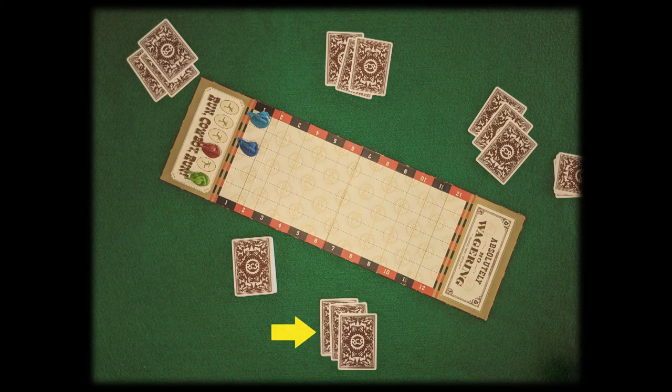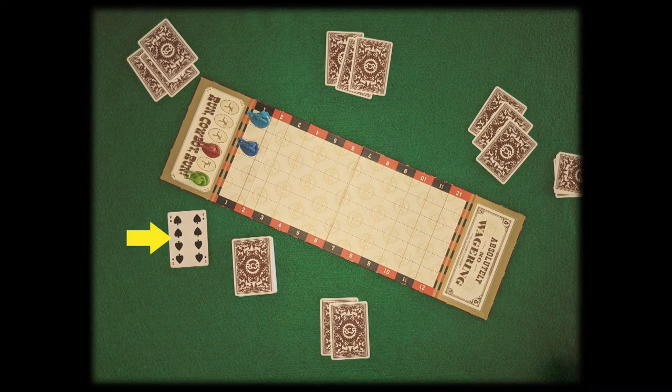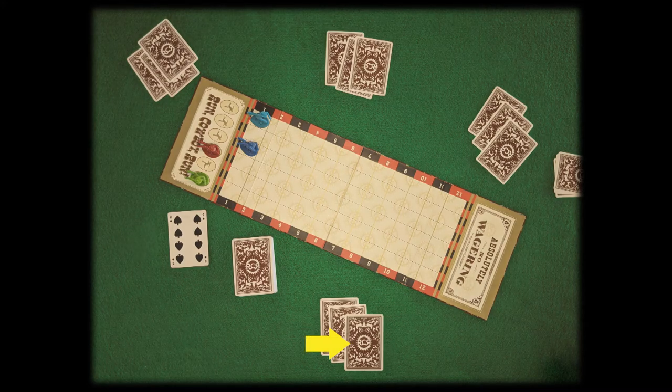The dealer, player number four, starts a new discard pile with the card of his choice, an eight. He takes a card.